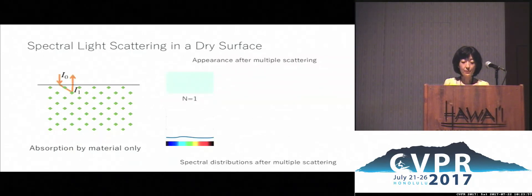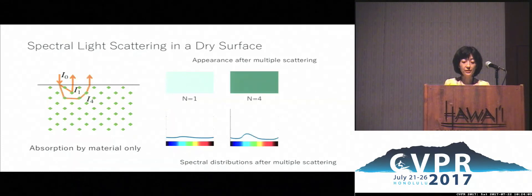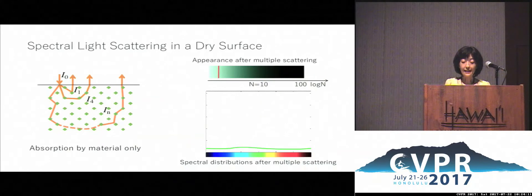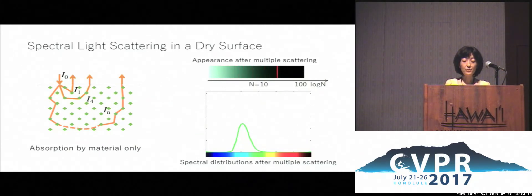For example, this is the colour and spectral distribution after single scattering, 4 times, and 10 times scattering. As you can see, the more particles the light scatters through, the sharper the spectral distribution and the more saturated the colour.